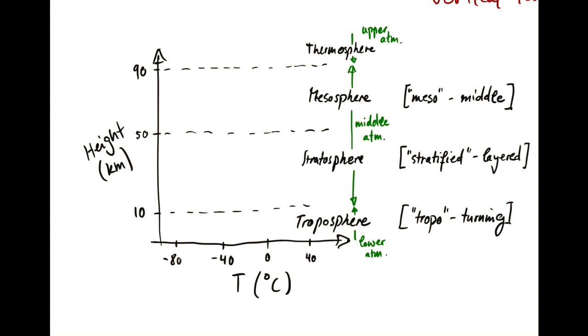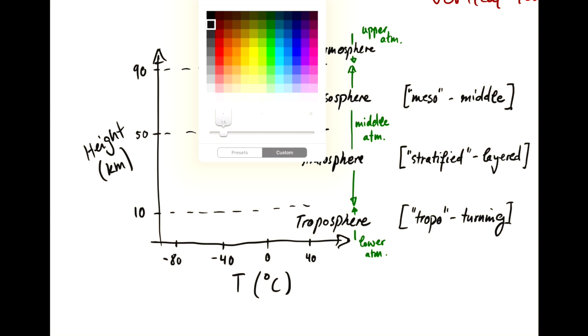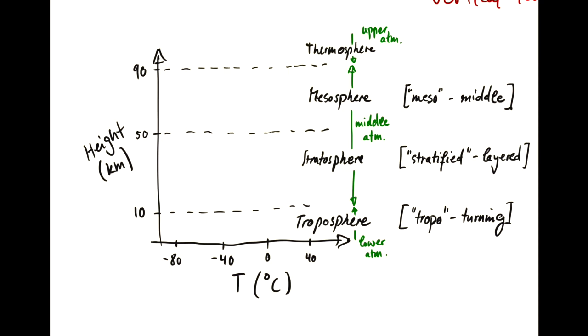Spans most of the temperature range of the bottom 90 kilometers of the atmosphere. So in the troposphere, we have a steadily declining temperature, fairly linearly,